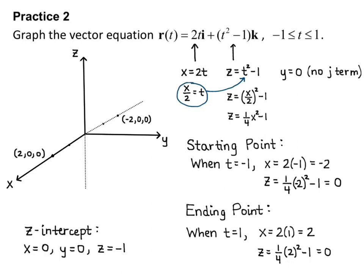I draw my x, y, z axes with the negative x-axis as a dotted line. I plot the starting point (−2, 0, 0), the z-intercept (0, 0, −1) — drawing the negative z-axis as a dotted line — and the ending point (2, 0, 0), and I draw a parabola through these points. I put an arrow on the parabola to show the direction it is traced out. So r(t) = 2ti + (t² − 1)k is the parameterization of z = (1/4)x² − 1 in R3.